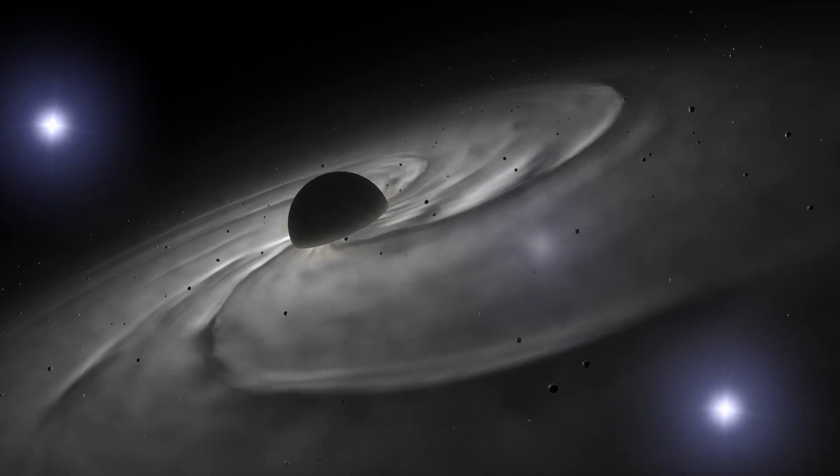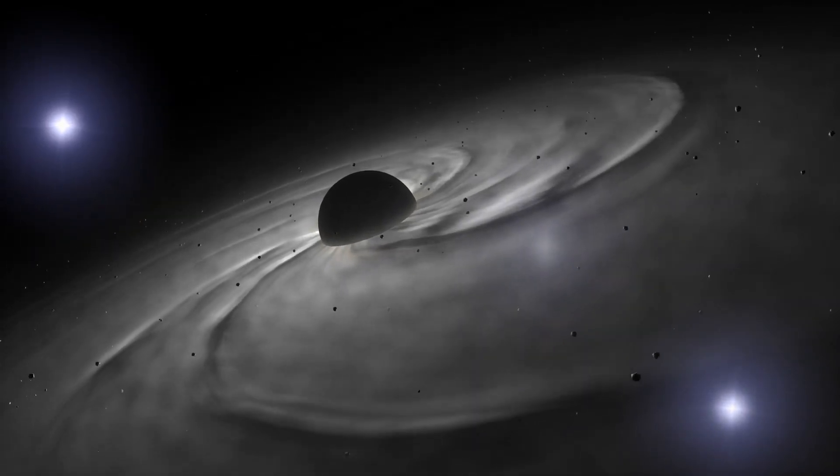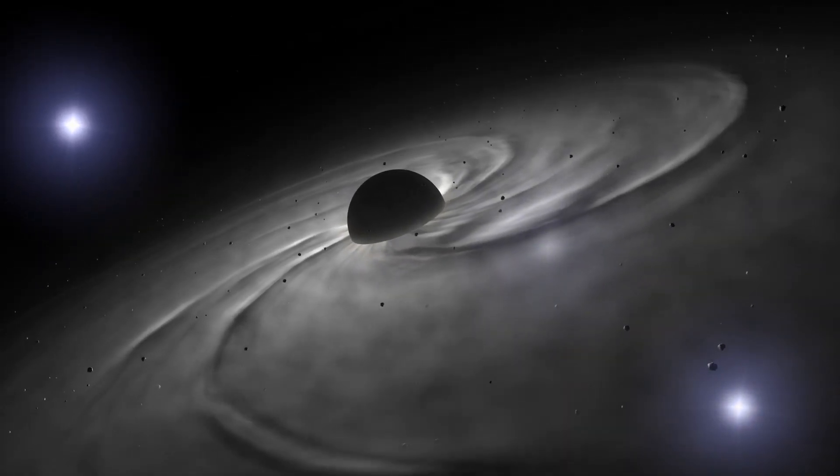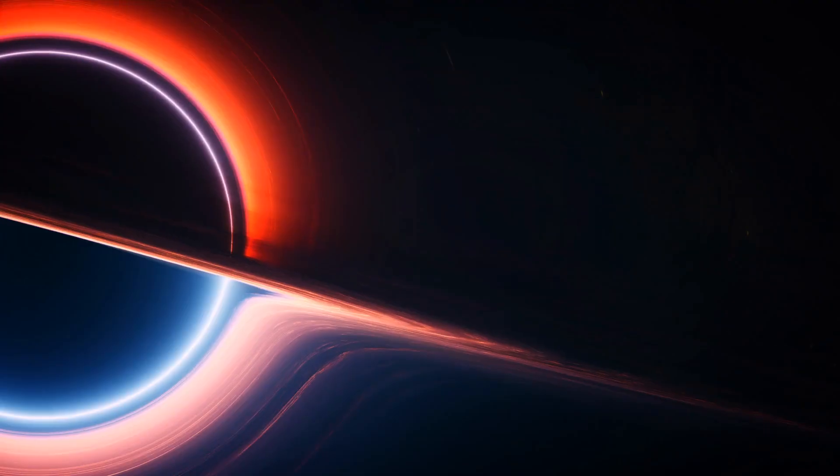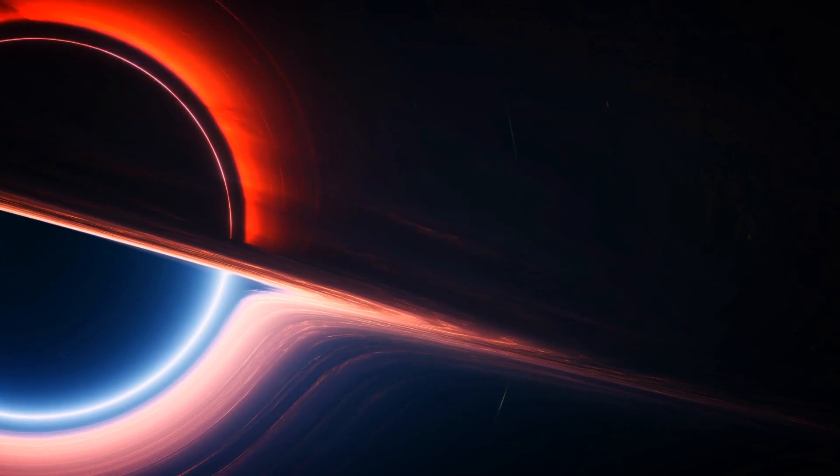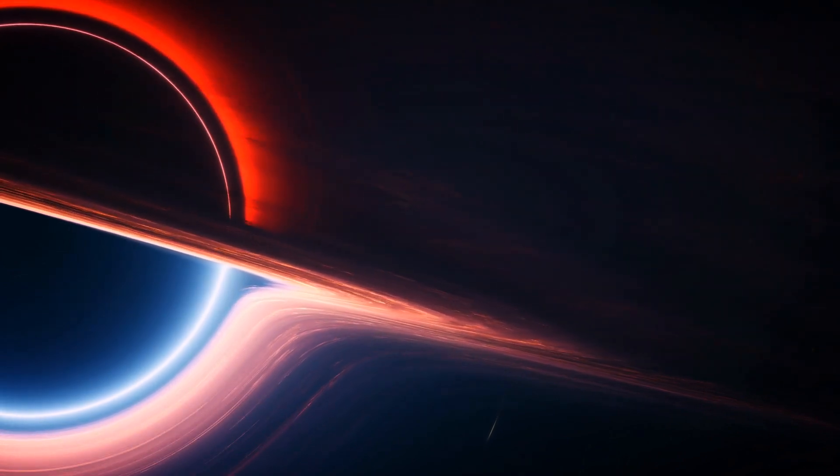This happens when a massive star collapses under its own gravity, compressing all its mass into an incredibly small, incredibly dense point known as a singularity. Surrounding the singularity is the event horizon, the boundary beyond which nothing can return.